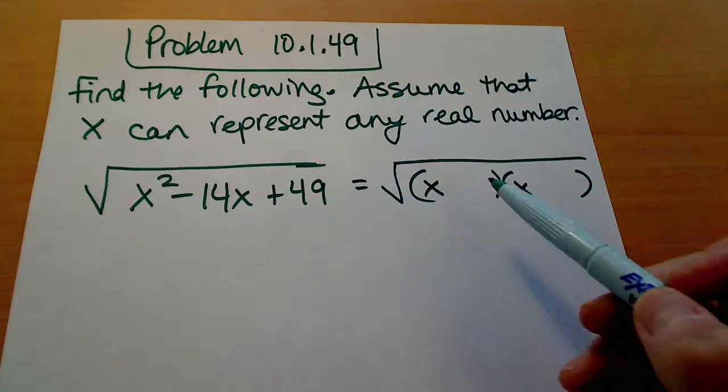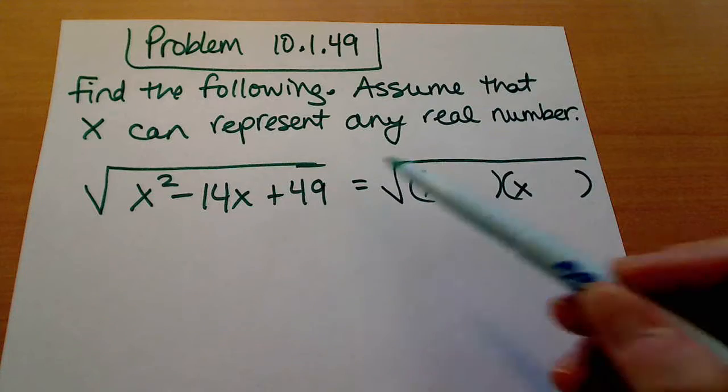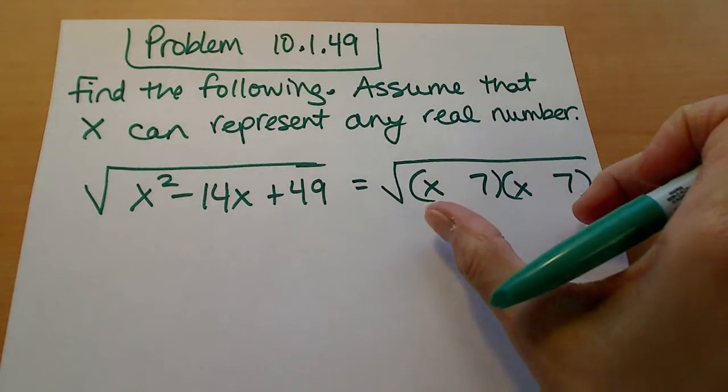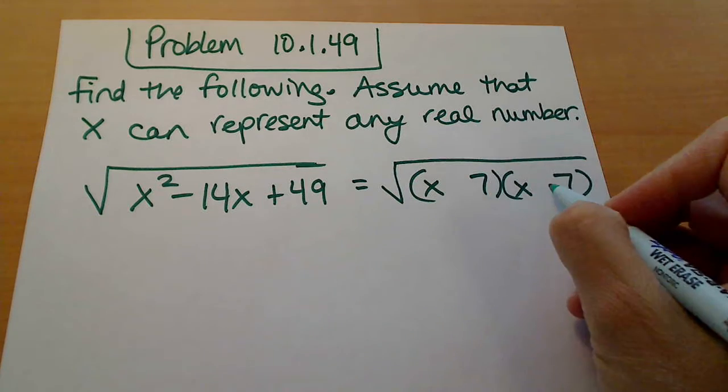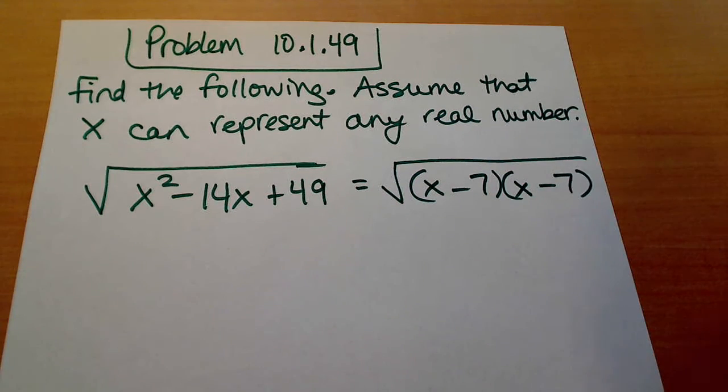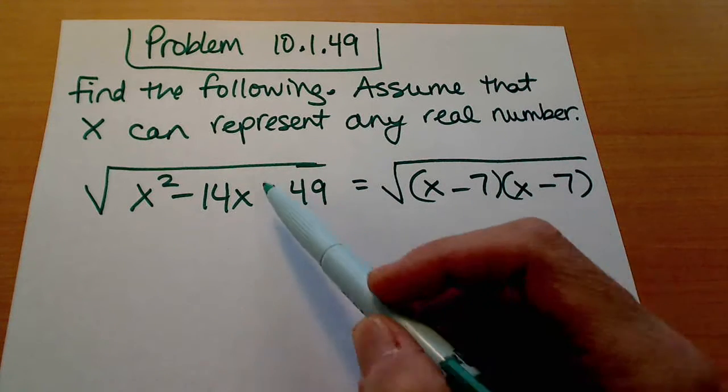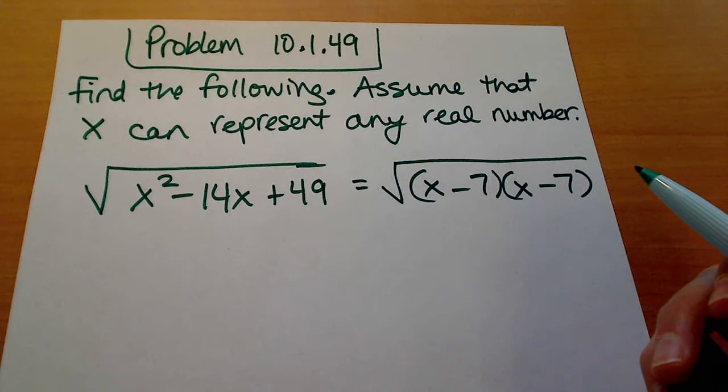But using trial and error, I'm going to split up the x squared into x and x. The 49 is split up into 7 and 7. That would give an outside and an inside of two 7x's. If I make those both negative, it'll give me that negative 14x in the middle. And then the last portion of foil there gives that positive 49.